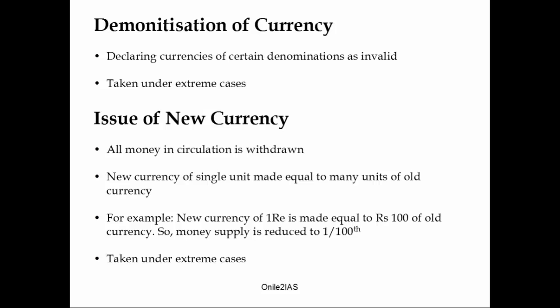The next measure done by RBI is demonetization of currency — a situation where RBI declares certain denominations of currency as invalid. This is taken under extreme cases. The last monetary measure is issue of new currency. In this measure, all money in circulation is first withdrawn, and new currency of a single unit is made equal to many units of old currency. For example, new currency of 1 rupee is made equal to 100 rupees of old currency, thus reducing money supply in the economy. This is also taken under extreme cases.